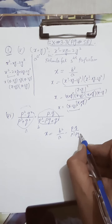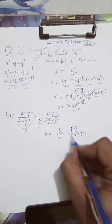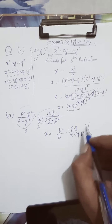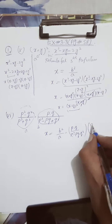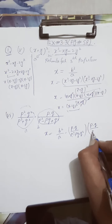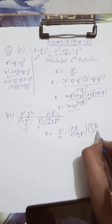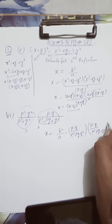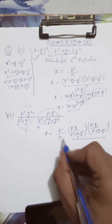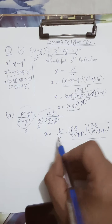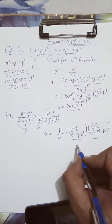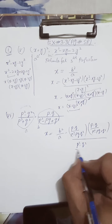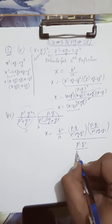Then again square: p minus q divided by p squared minus pq plus q squared, divided by the whole a. The first value is p squared minus q squared, divided by pq.